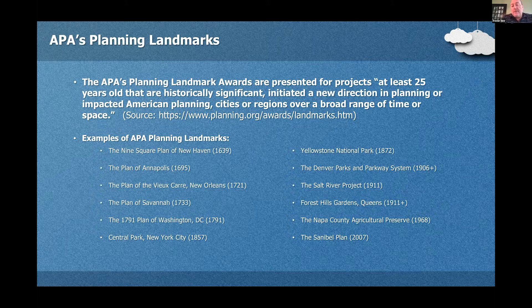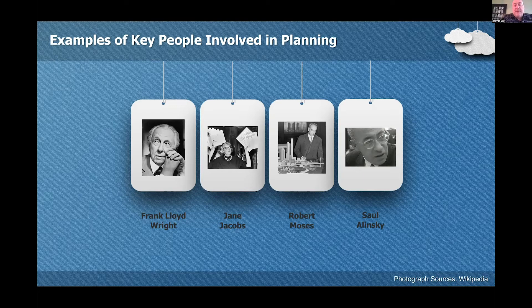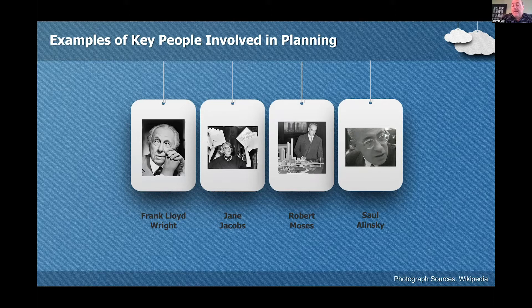The APA also wants us to remember that we need to be familiar with planners who may not be either professionally trained or educated as planners. There are examples of people shown on this slide — four individuals who are fantastic resources and really helped shape the field of planning today. We've got Frank Lloyd Wright, Jane Jacobs, and Robert Moses. I love the way we have the two of them together on this side, and then Saul Alinsky. Alinsky was a community activist and political theorist. His work through the Chicago-based Industrial Areas Foundation helped poor communities organize to press demands upon landlords, politicians, and business leaders.